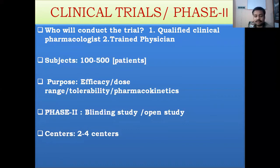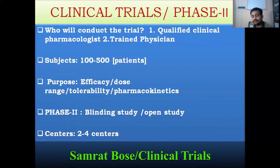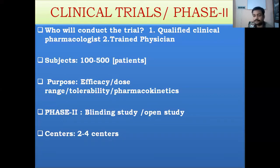Phase 2 includes both blinding and open studies. In a single-blinding study, patients don't know what they are consuming. In a double-blinding study, even the physicians don't know the exact outcome of the investigational drug — and neither do the patients. After the study, all data are collected in a randomized manner, processed at two different centers, compared, and then analyzed.